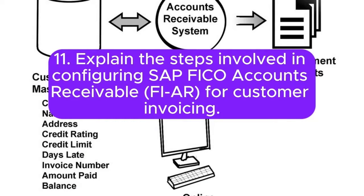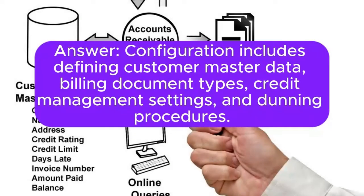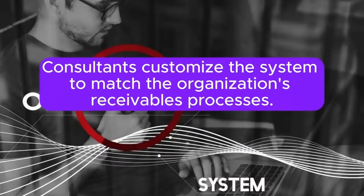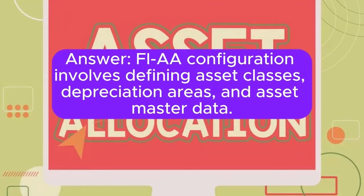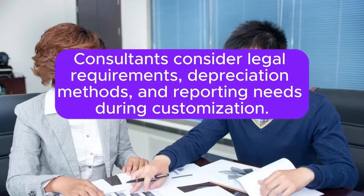Question 11: Explain the steps involved in configuring SAP FICO Accounts Receivable (FI-AR) for customer invoicing. Configuration includes defining customer master data, billing document types, credit management settings, and dunning procedures. Consultants customize the system to match the organization's receivables processes. Question 12: What considerations are important for SAP FICO Asset Accounting (FI-AA) configuration in an implementation project? FI-AA configuration involves defining asset classes, depreciation areas, and asset master data. Consultants consider legal requirements, depreciation methods, and reporting needs during customization.